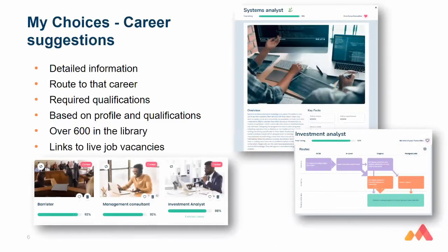The My Choices and careers suggestions pages are designed to be really easy to read. You look at the overview and then how you can get there — routes to that career. Each career has a nice infographic on the right-hand side, showing students and teachers that you don't necessarily need to go down the academic route. You can also go down the vocational route, which allows parents to understand that you don't need to take A-levels specifically — you could go down the T-level route and still reach the same career path.